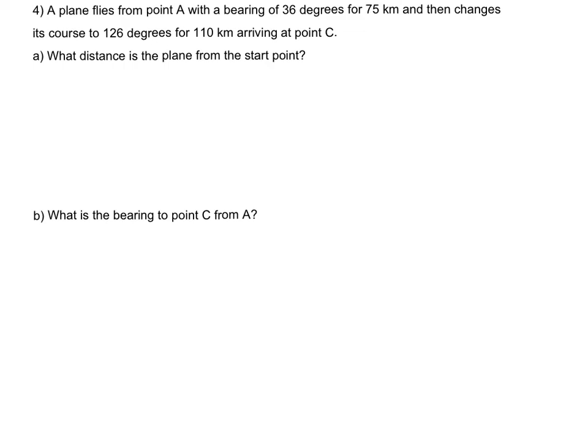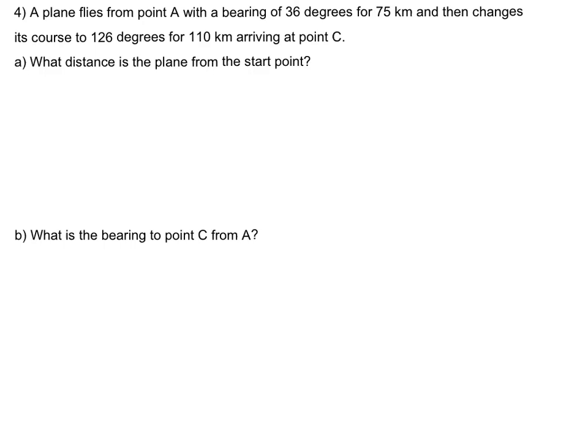Lastly, let's finish with a beauty. A plane flies with a bearing of 36 degrees for 75 kilometers, then changes its course to 126 degrees for 110 kilometers arriving at point C. So our plane is going to start from here. Put in the dotted line. Again, it's going to travel 36 degrees. So bearing's 36. So something like that for 75 kilometers. Ignore my neighbors banging their doors. Now, it gets to point... It changes its course. So we'd say it gets to point B here and then it changes course.